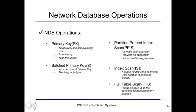The fourth operation is the index scan operation — a regular index scan that hits all partitions in NDB. It costs scale linearly with the number of partitions, compared to the partition-pruned index scan which has a constant cost. The last operation is the full table scan operation, which reads all rows in all partitions in NDB without using any indexes.